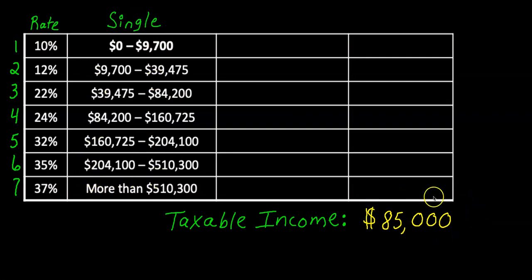So the first step here is just to figure out where this $85,000 falls on the table, which tax bracket or which row. So I think the following to myself. I go to tax bracket one and I say does $85,000 fall between zero dollars and $9,700?